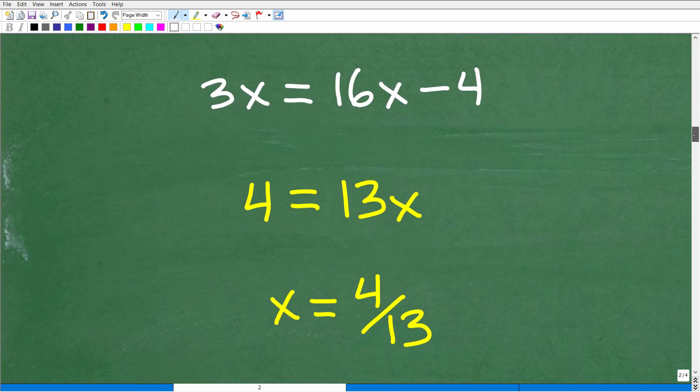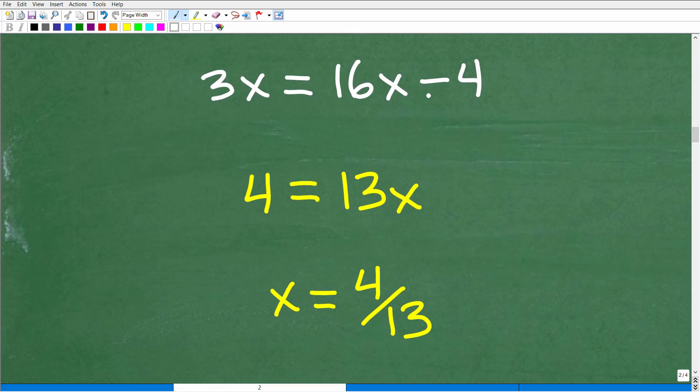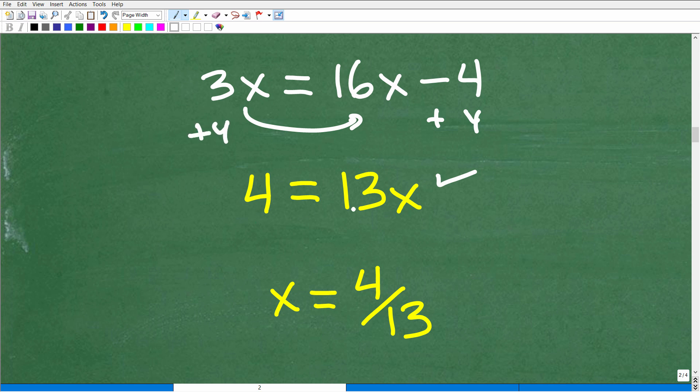All right, so here we go. So this is 3x is equal to 16x minus 4. So I'll move the 3x over on this side. That'll give me 13x, and then I'll add 4 to both sides of the equation. So I have 4 is equal to 13x, and I'll divide both sides of the equation by 13, and you get x is equal to 4 over 13.